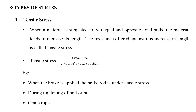Types of stress — first one is tensile stress. When a material is subjected to two equal and opposite axial pulls, the material tends to increase its length. The resistance offered against this increase in length is called tensile stress. Tensile stress is equal to axial pull divided by area of cross section.